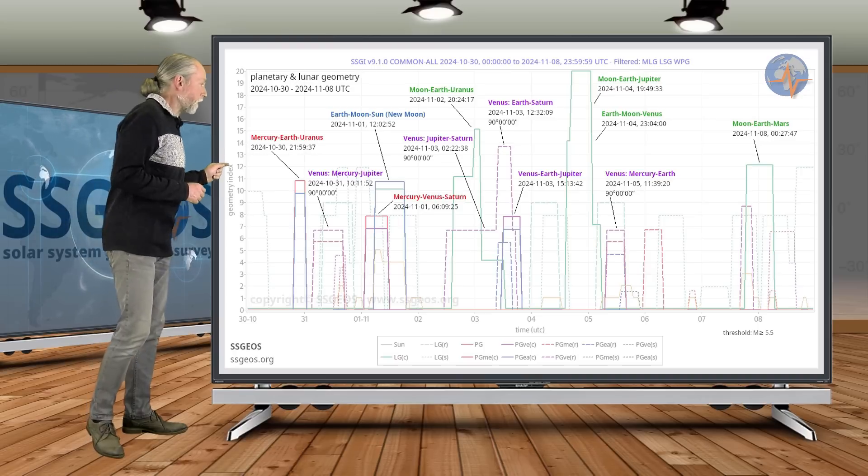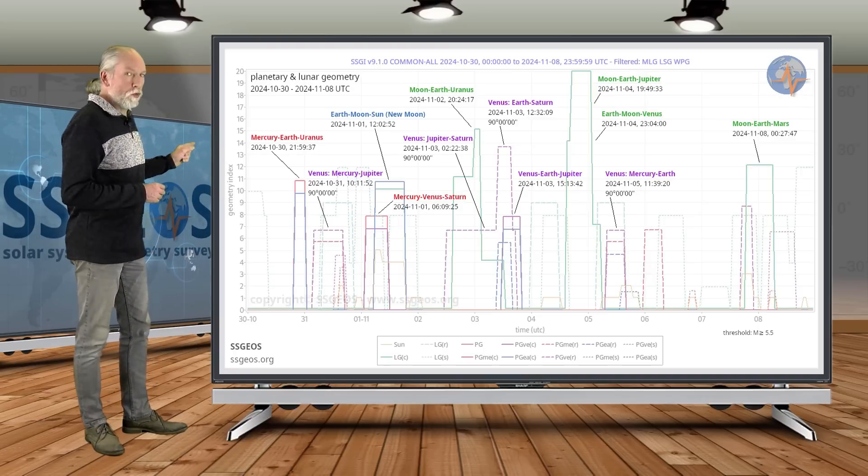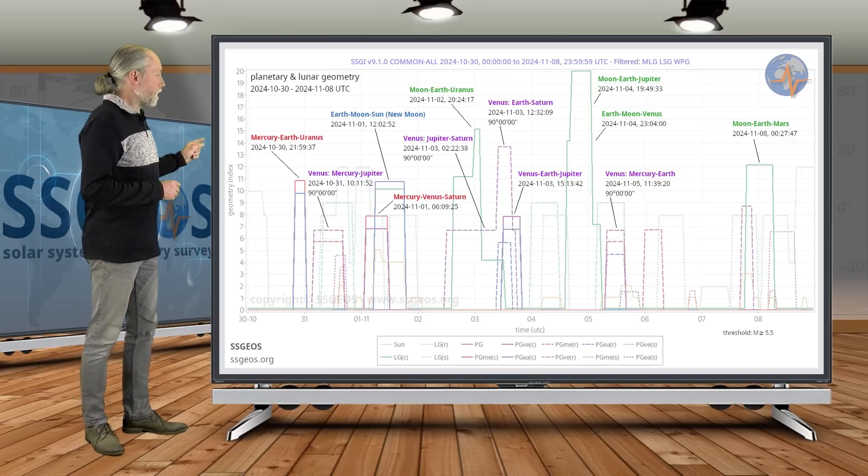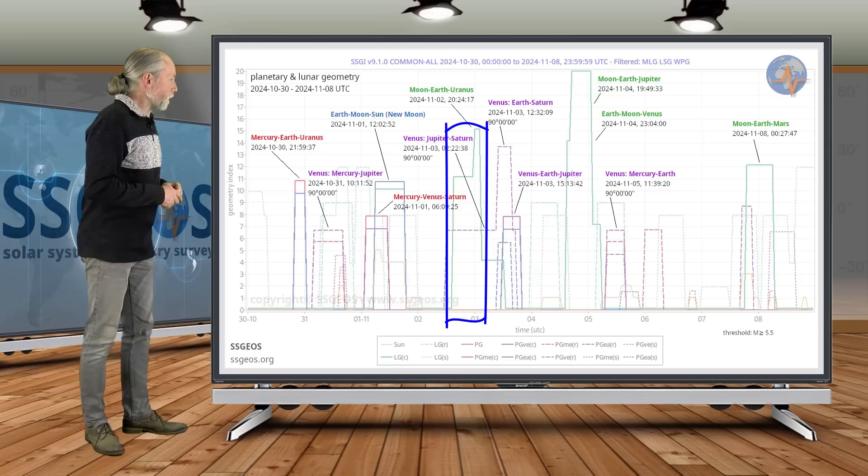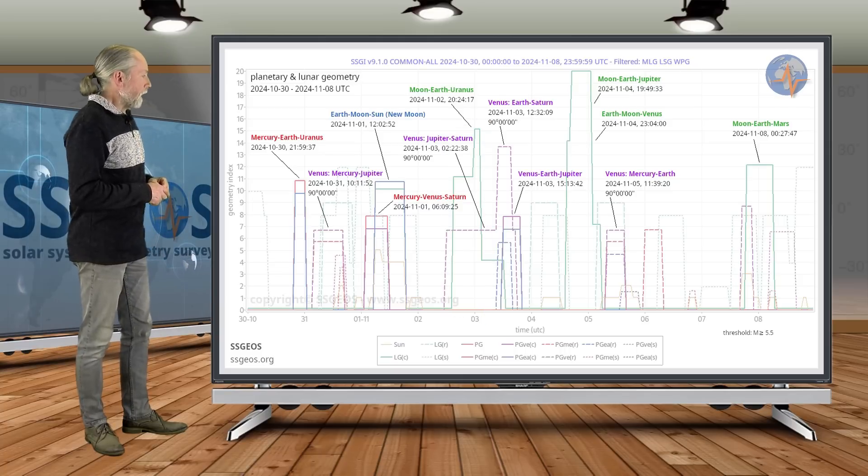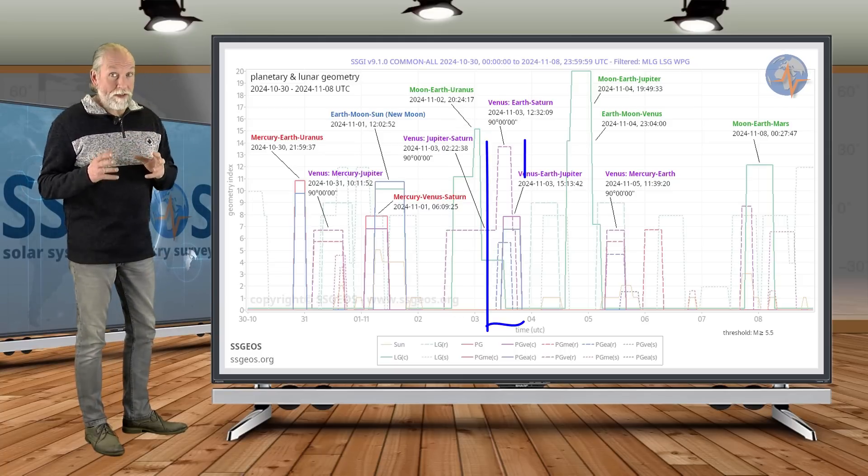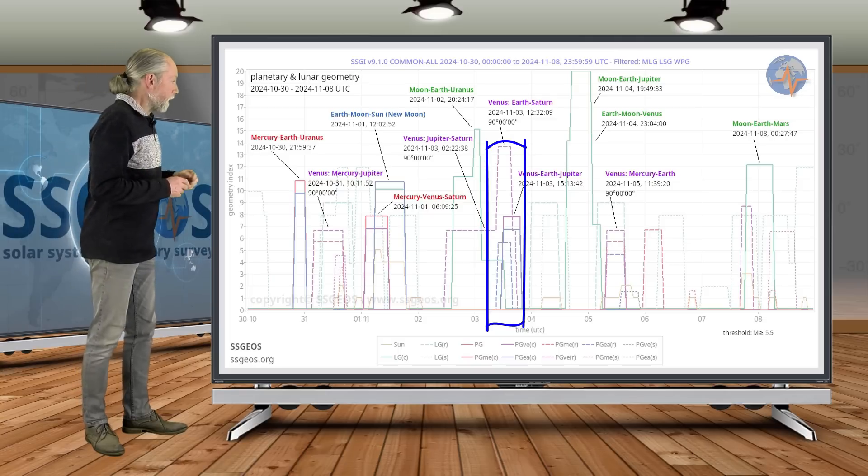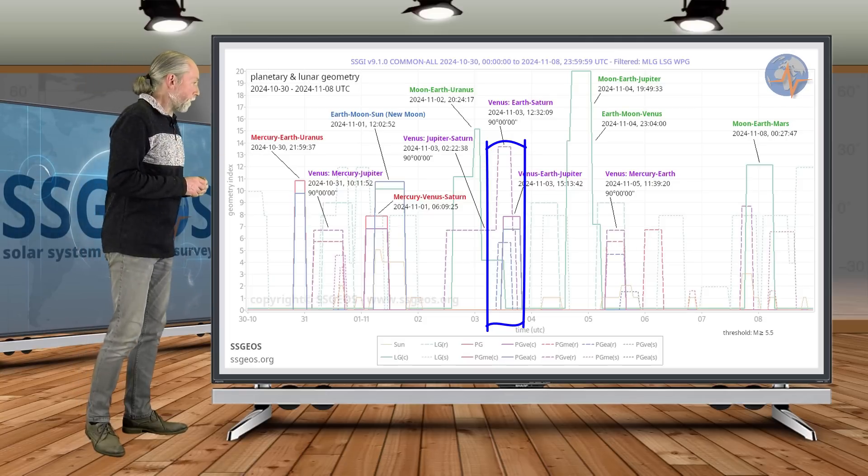Back to the SGI graph, we see the high lunar peaks as well. That is the moon in conjunction with Uranus on the 2nd of November. Then we see a right angle geometry with Venus. That's Venus, Jupiter, Saturn on the 3rd.